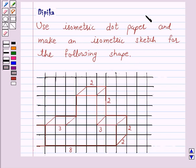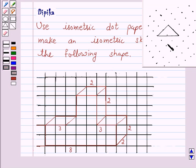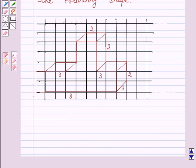Let us first understand isometric dot paper and isometric sketch. Isometric dot paper is a sheet of paper which is divided into small equilateral triangles made of dots as shown. In an isometric sketch, the measurements are of exact size as those of the solid.